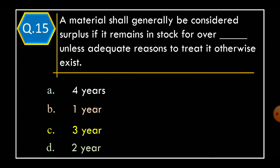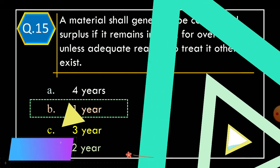Question 15. A material shall generally be considered surplus if it remains in stock for blank, unless adequate reasons to treat it otherwise exist. Option A: Four years. Option B: One year. Option C: Three years. Option D: Two years. The correct option is Option B: One year. Thanks for watching.